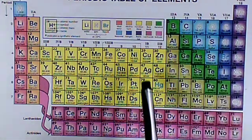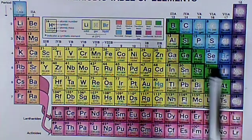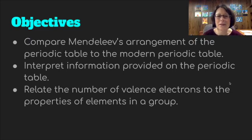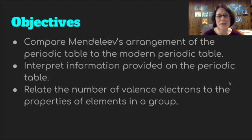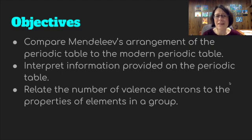The reason metalloids are green is because traditionally we color metals yellow and non-metals blue, and yellow and blue make green for the metalloids that act like both. Our objectives today were to compare Mendeleev's arrangement of the periodic table to the modern periodic table, interpret information provided on the periodic table, and relate the number of valence electrons to the properties of elements in a group. We took a look at the most reactive and the least reactive based on the number of valence electrons. Don't forget to memorize your symbols for your quiz and to complete your five questions for this section — and that is it for this chapter, so you should start studying for the test.